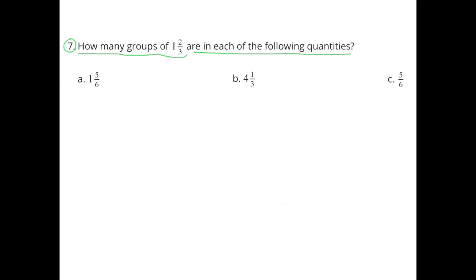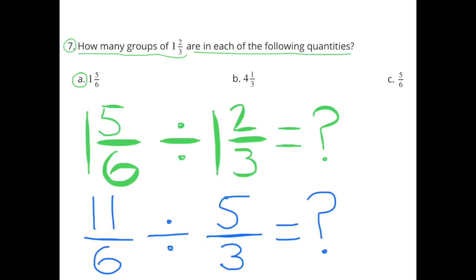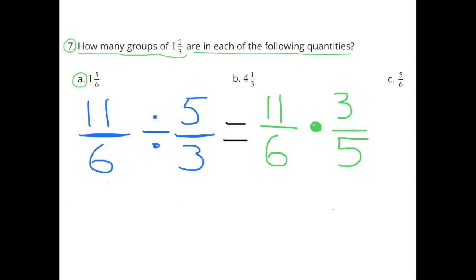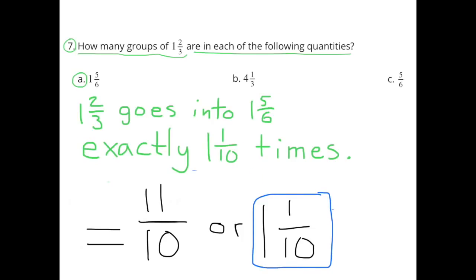Number 7: How many groups of 1 and 2 thirds are in each of the following quantities? Part A: 1 and 5 sixths. That is 11 sixths divided by 5 thirds, which equals 11 sixths times 3 fifths. Simplifying: 3 divided by 3 is 1, and 6 divided by 3 is 2. Multiplying: 11 times 1 is 11, and 2 times 5 is 10, giving 11 tenths, or 1 and 1 tenth. So 1 and 2 thirds goes into 1 and 5 sixths exactly 1 and 1 tenth times.